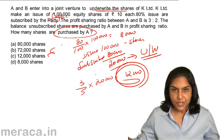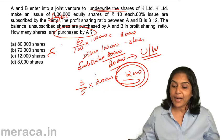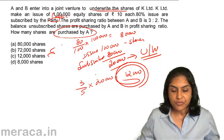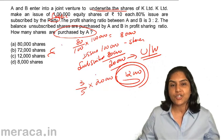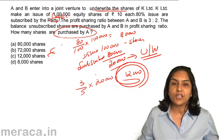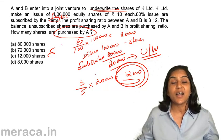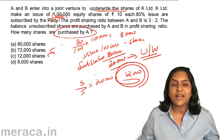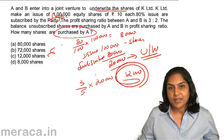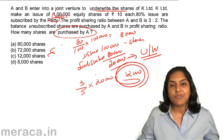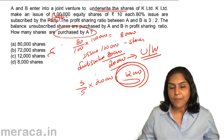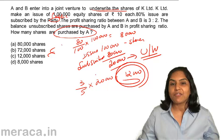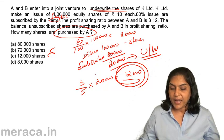The company has made an issue to the public. The total issue is for 1 lakh shares. The public took only 80,000 shares. Therefore, the balance 20,000 has to be taken by A and B, who have entered into a joint venture as underwriters. Out of this 20,000, A will take 3 fifths and B will take 2 fifths. Therefore, 3 fifths of 20,000 = 12,000 shares would be taken up by A.